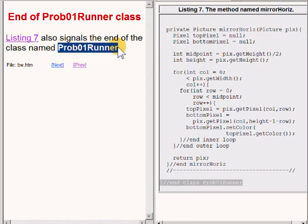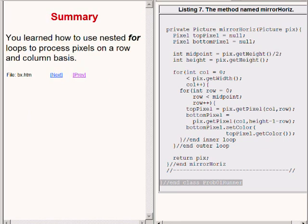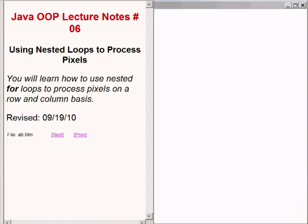So let's summarize what you learned in this lecture. You learned how to use nested for loops to process pixels on a row and column basis. That concludes lecture number 6, titled Using Nested Loops to Process Pixels.